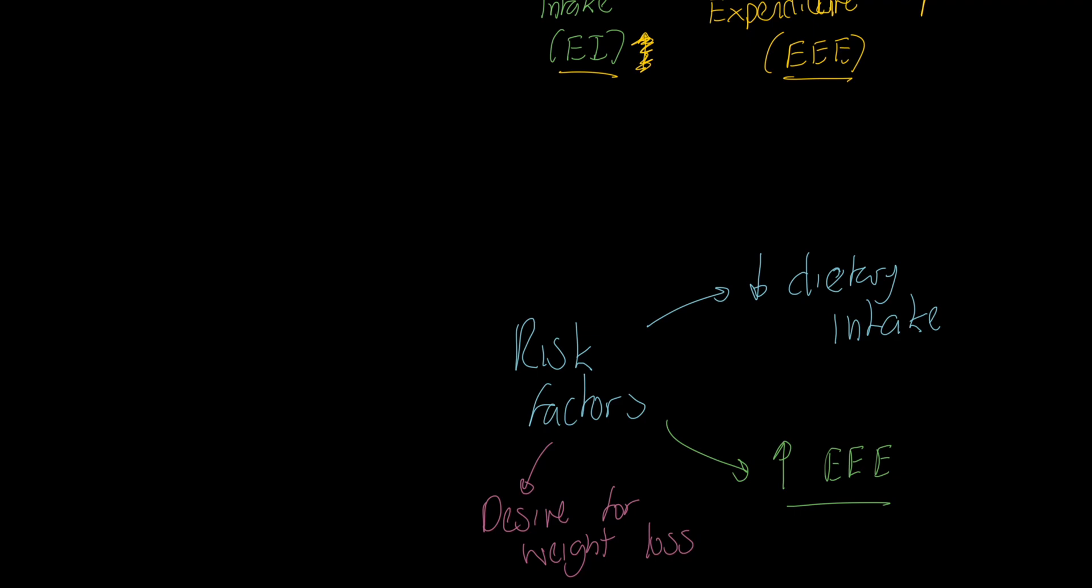Someone who's effectively gone on to a diet, is on that diet for a period of time, and then ups their exercise quantity quite drastically, that sort of desire for weight loss, that combination is going to be something that's going to predict for this. And we'd also say this is quite common in disordered eating. Someone who's experiencing eating disorder type conditions might be more likely to experience this.